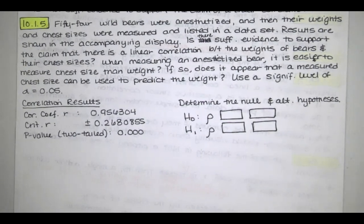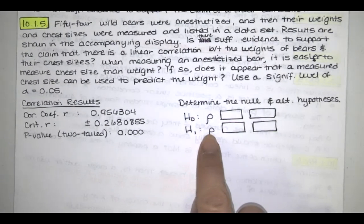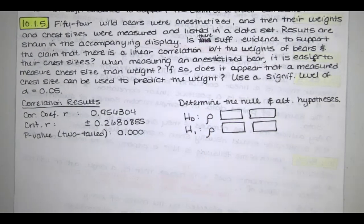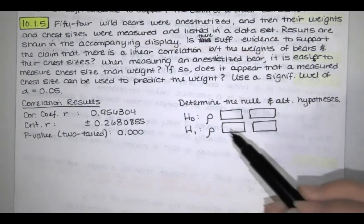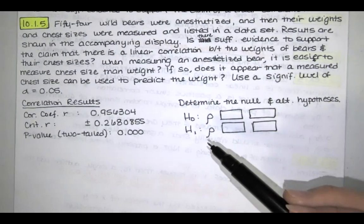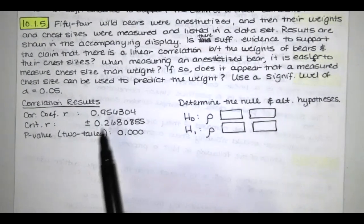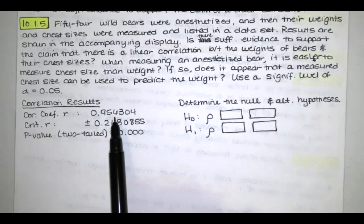So first we're asked to determine the null and alternative hypotheses and they automatically have these variables rho here. Remember what rho is? That's the linear correlation coefficient for the population of paired data.